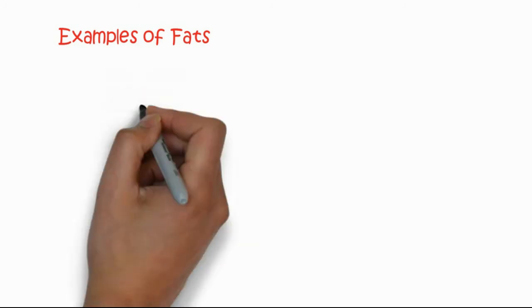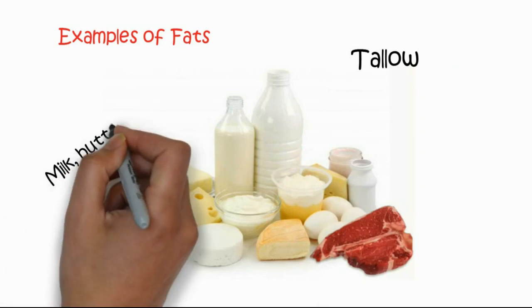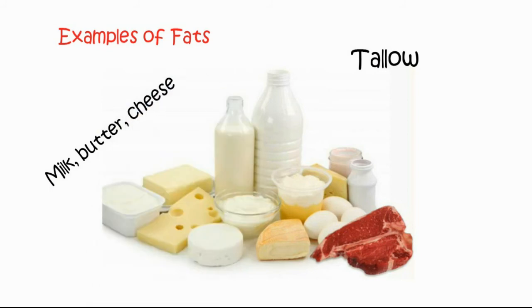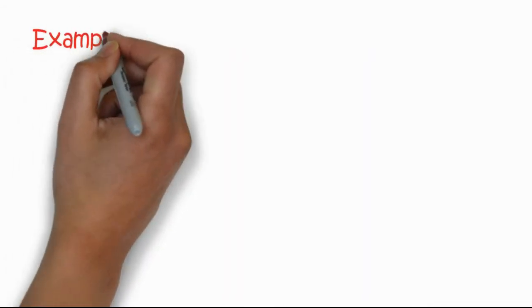Here are some examples of fats. In this picture you can see that the sources of fats are mostly solid in nature. Examples include cheese, milk, butter, eggs, and meat — all of which are usually obtained from animal products such as tallow, milk, butter, cheese, lard, and meats.